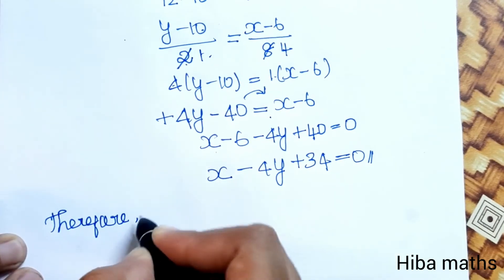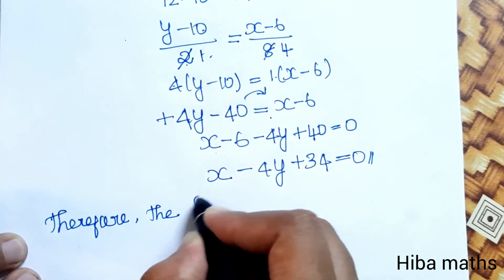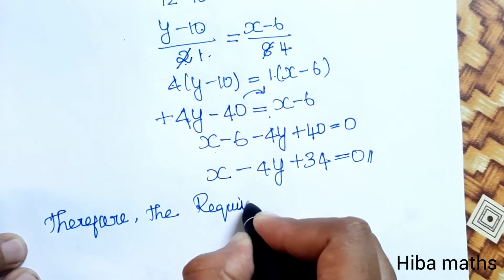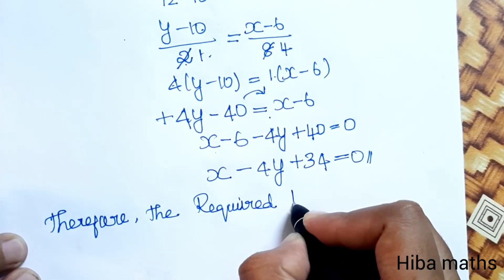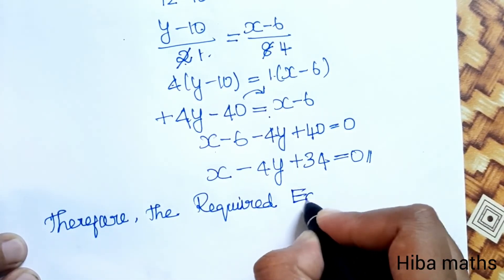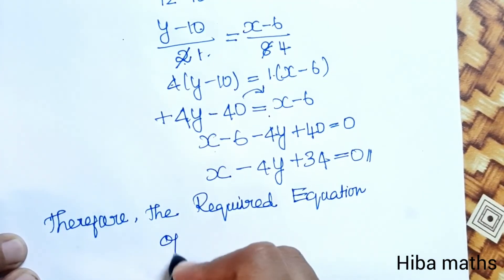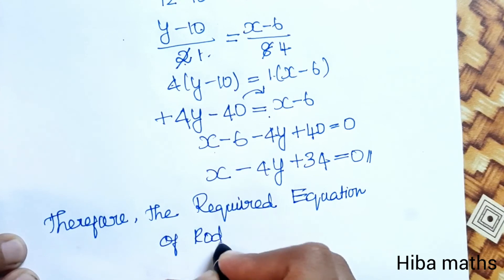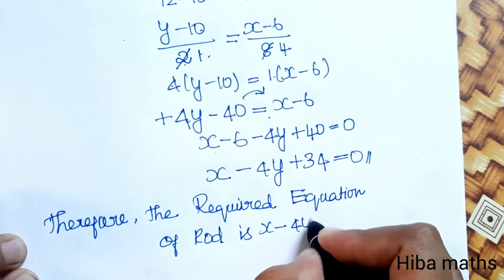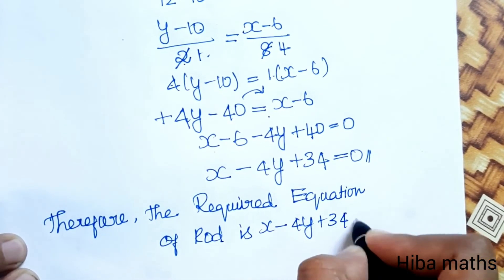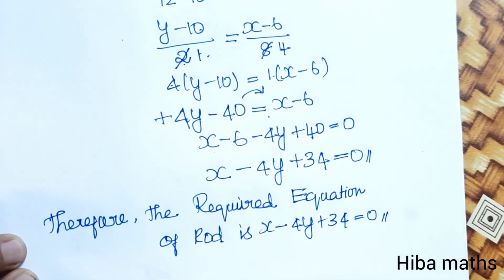Therefore, the required equation of the rod is x - 4y + 34 = 0. Easy to understand. Thank you so much for watching.